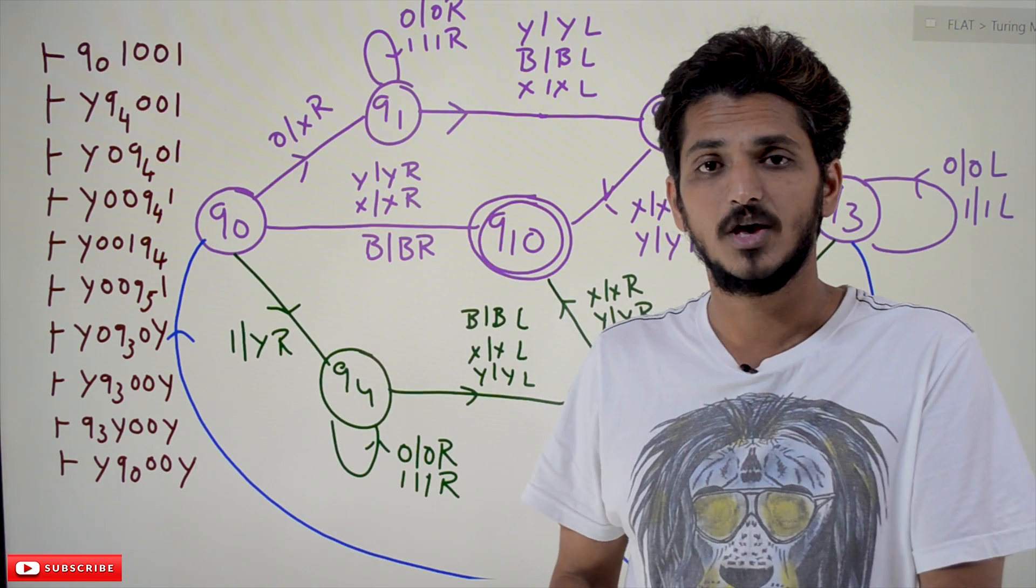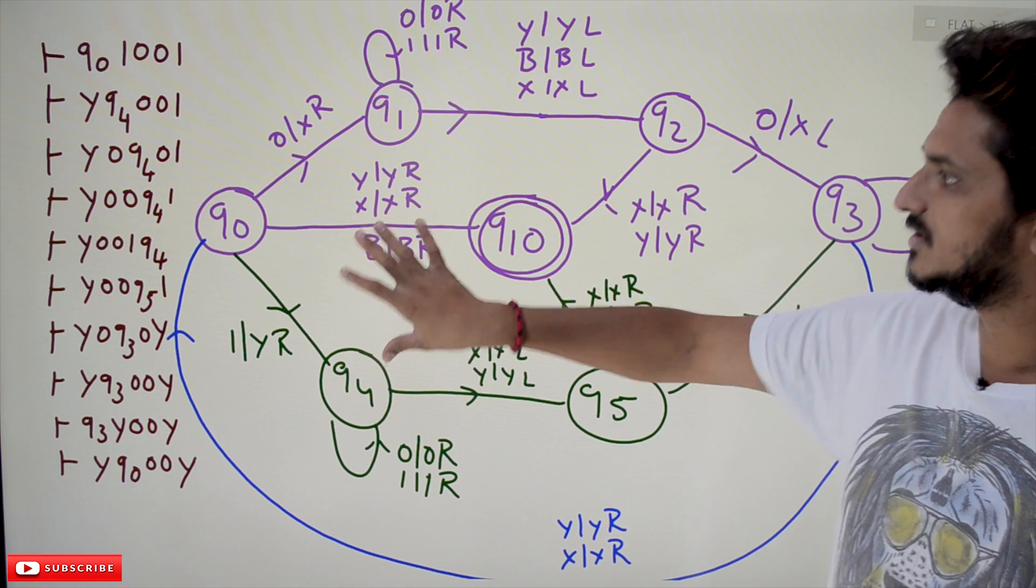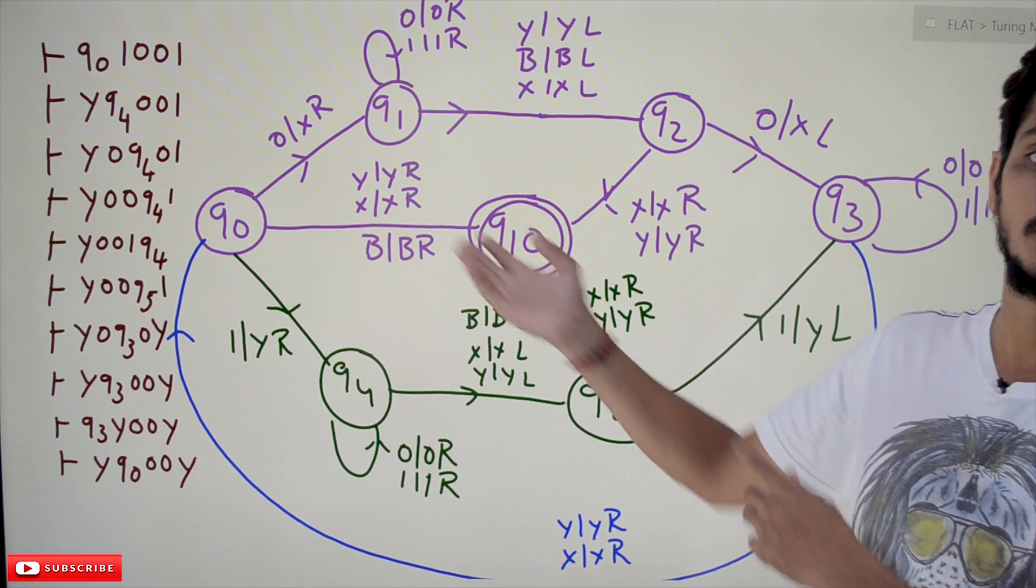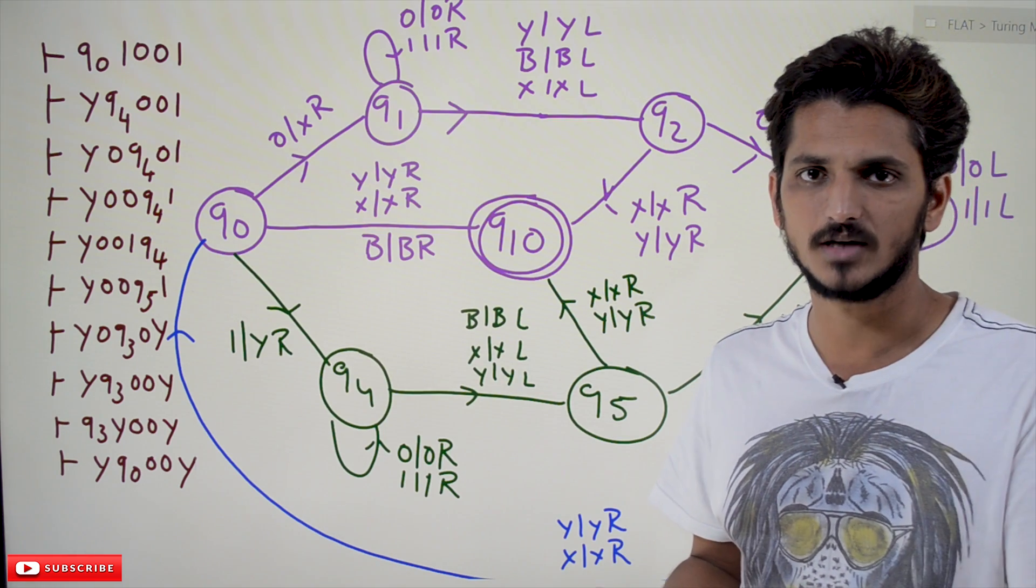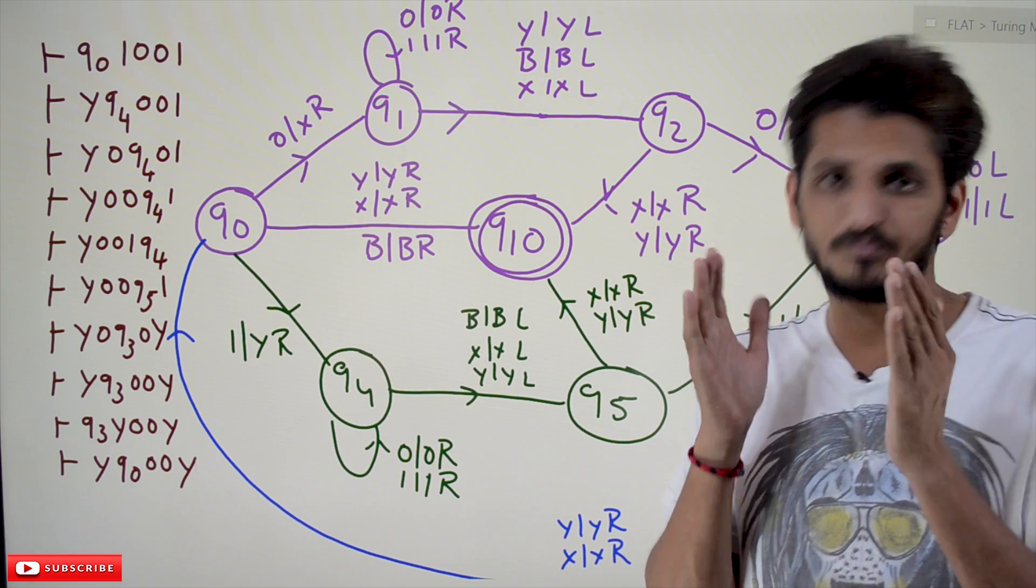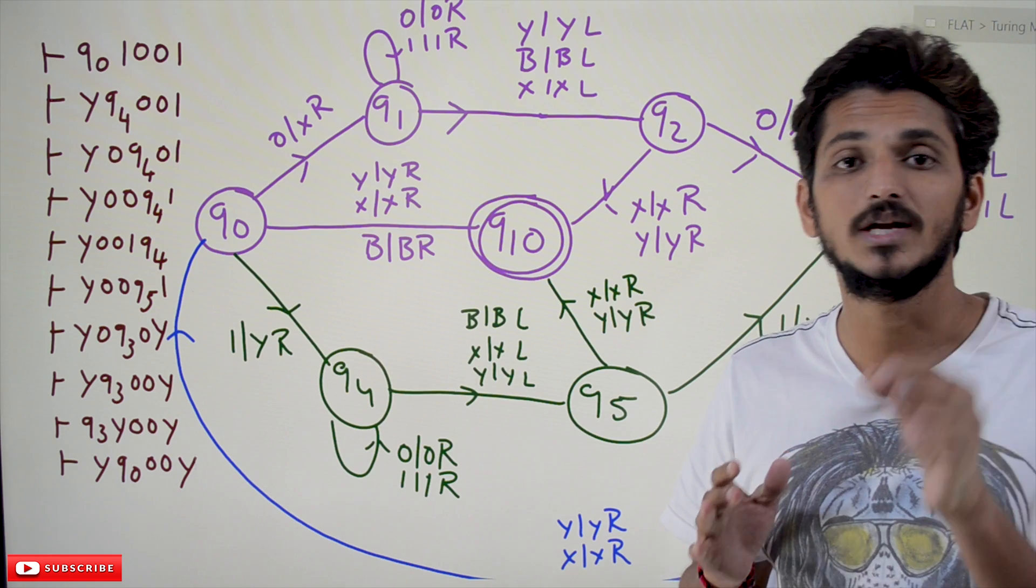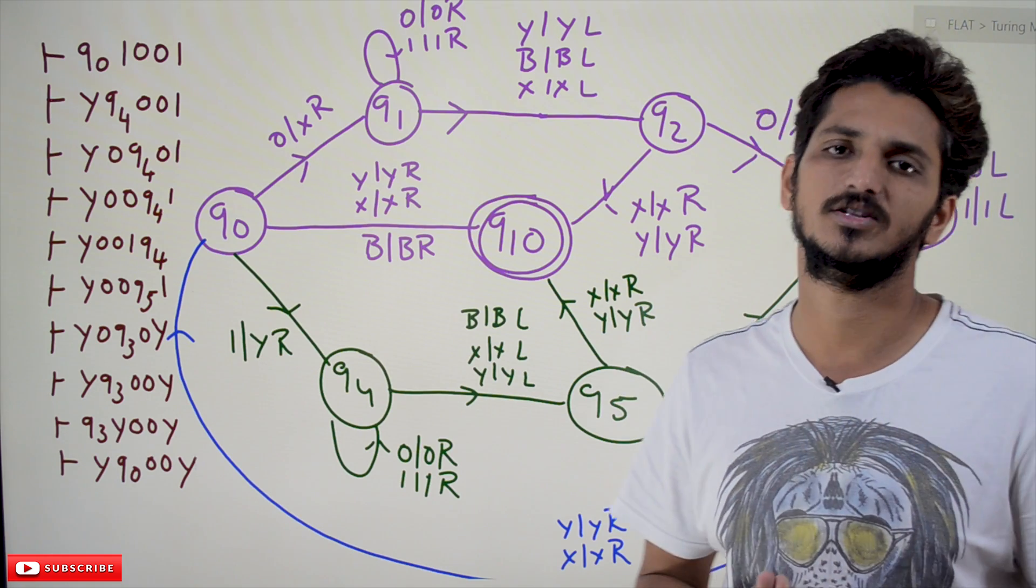You cannot simply say yes, this Turing machine is going to accept it because it is moving to the halt state. No, you cannot say that. You won't get marks. There is some representation to show it in the exam. That is what instantaneous description means.